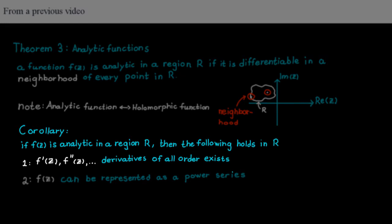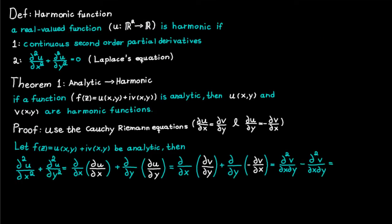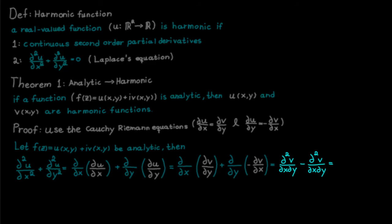Because if the function f is analytic, then it should be infinitely differentiable. And that means that the function v and function u should be infinitely differentiable as well. And therefore we can draw the conclusion that the function v has continuous second order partial derivatives, which makes these two terms here the same.